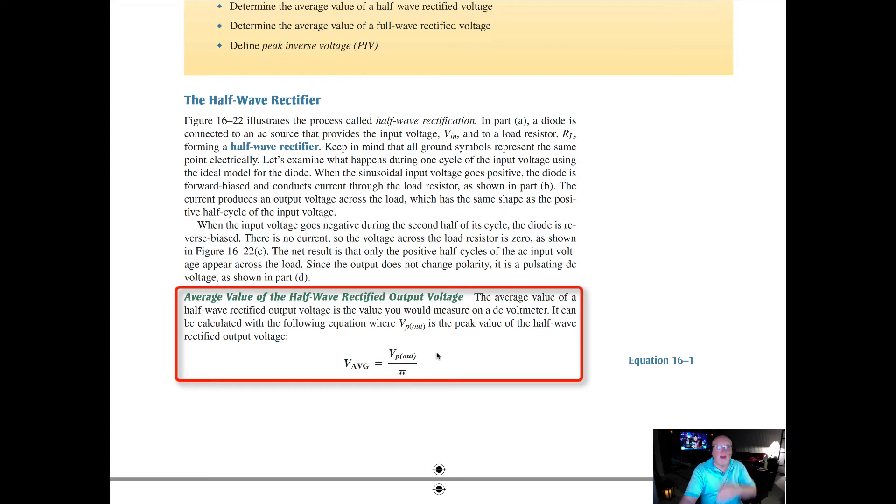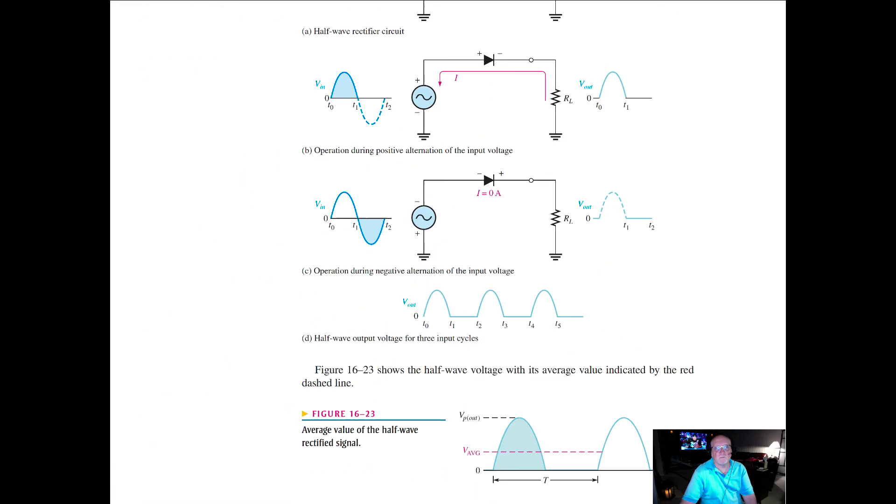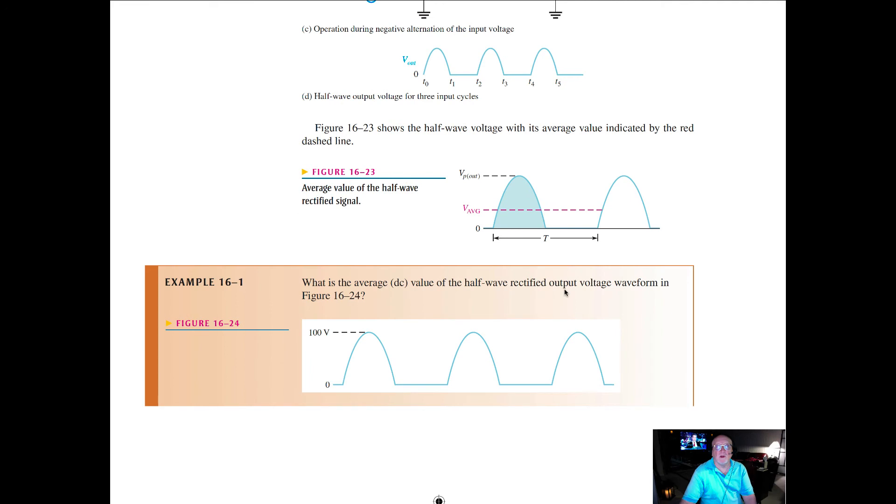Why do we do pi? Because we're only going halfway. If we were able to get a full 360 degrees or 2 pi out of this, we would divide by 2 pi. But since we only have good information or good DC in a half a cycle, we divide by pi. That's why we go from zero to pi, and from pi to 2 pi there's nothing.